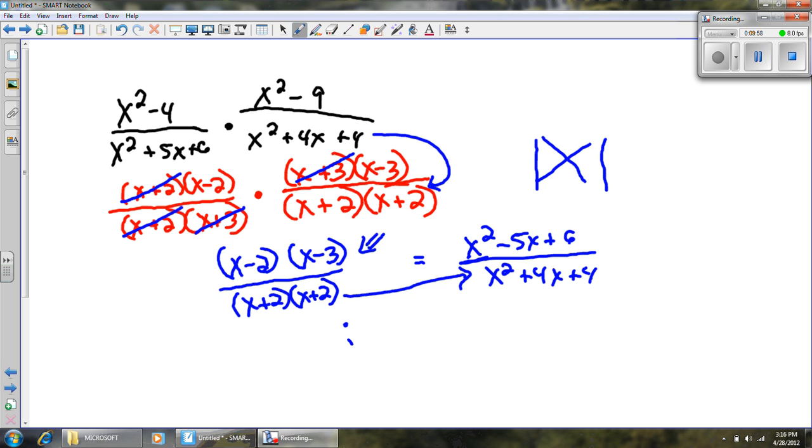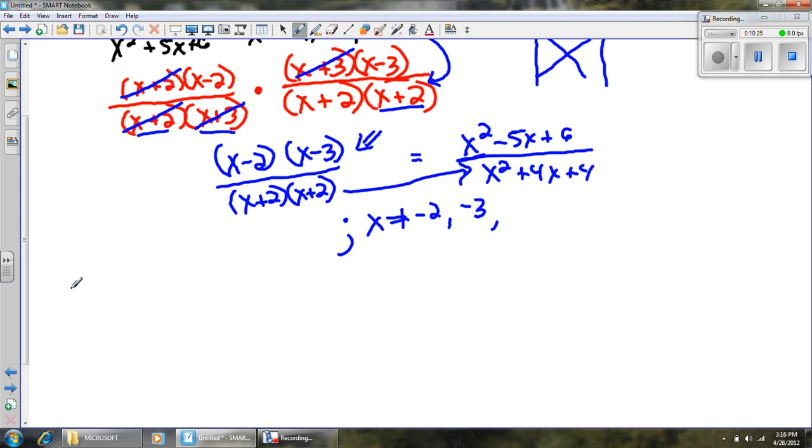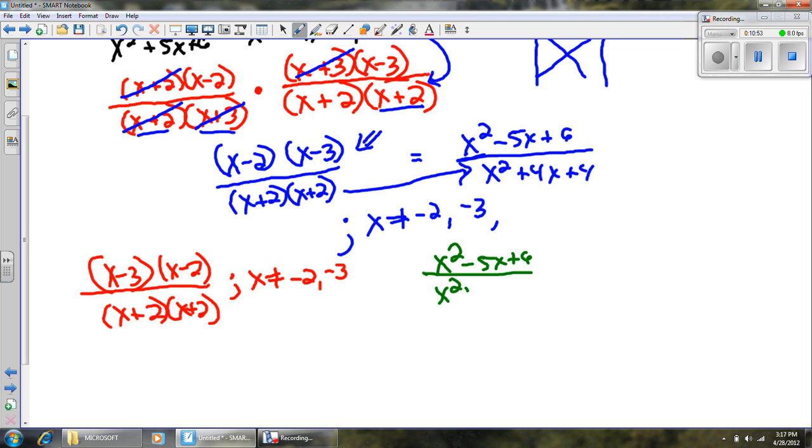And so the restrictions are that x cannot equal -2. That's already covered there. -3 right there. And -2 is covered. So x cannot be any of those. So a good final answer would be either (x - 2)(x - 3) over (x + 2)(x + 2), x does not equal -2 or -3. Or you could have stated it as x² - 5x + 6 over x² + 4x + 4, and x does not equal -2 or -3. Both the green and the red answer get full credit.